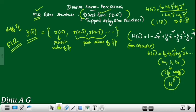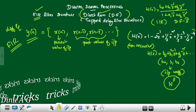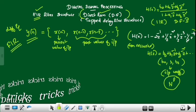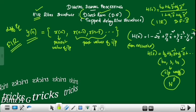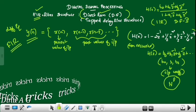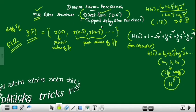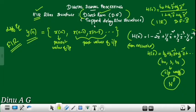From the given system function, it comes under FIR filter. We are going to implement that system function in the direct form, also called the Tapped Delay Line structure. For FIR, we implement only the numerator term — there is no denominator term.